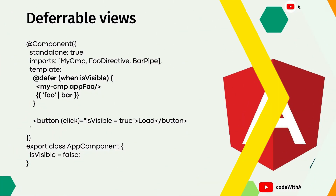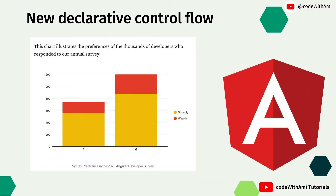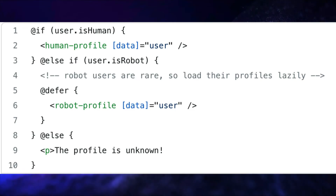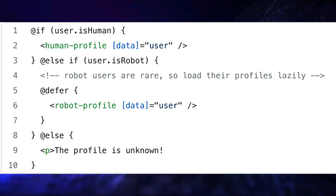Angular 17 introduces a new declarative control flow system that makes it easier to write and maintain complex conditional logic. The new control flow system is based on the @ syntax, which is similar to syntax used in other programming languages such as JavaScript and Python. Basically, this is the same syntax change I already discussed — it's just about how the syntax is going to change.